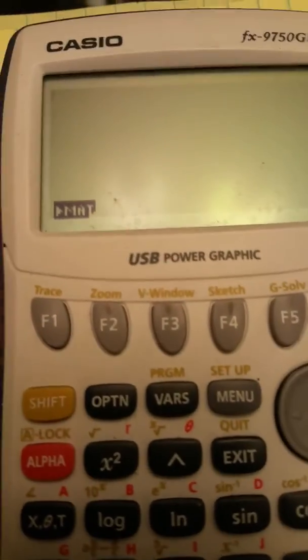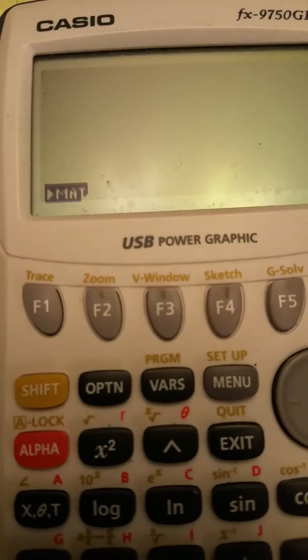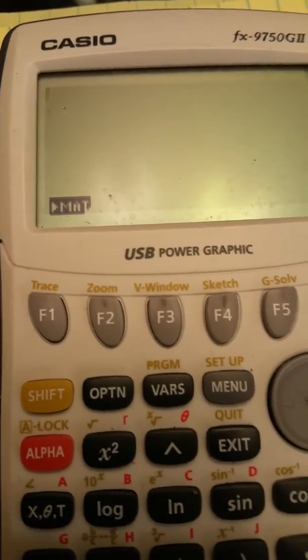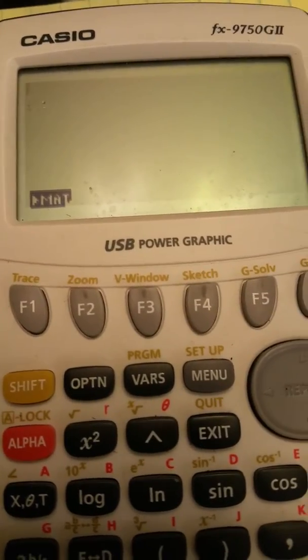All right, so this is how you do the nth root of a number on the Casio 9750.